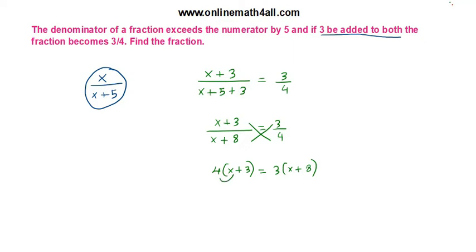Now, 4 has to be distributed to x and 3, and 3 has to be distributed to x and 8. When we distribute: 4 times (x + 3) gives 4x + 12, and 3 times (x + 8) gives 3x + 24.